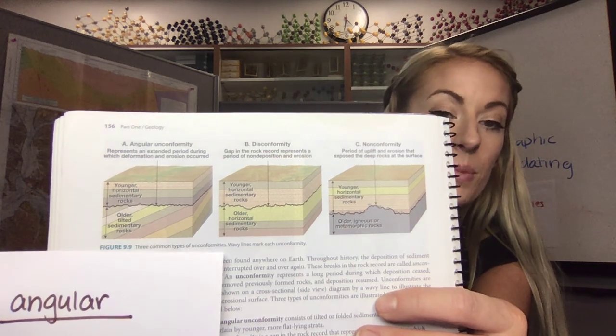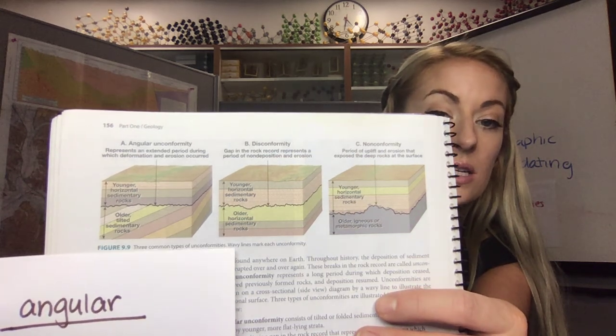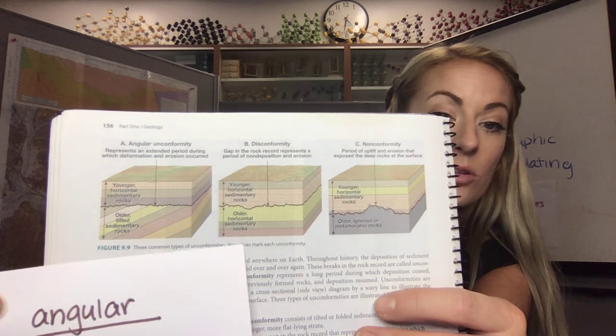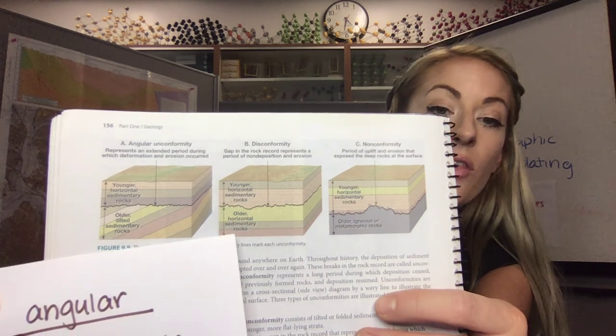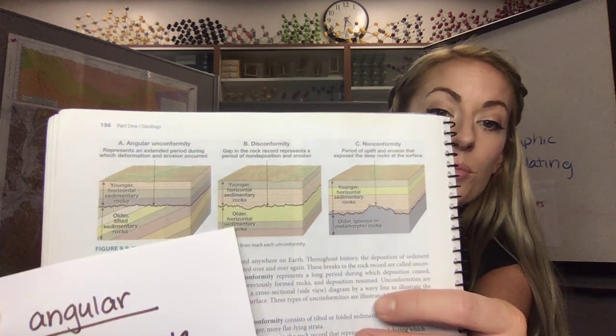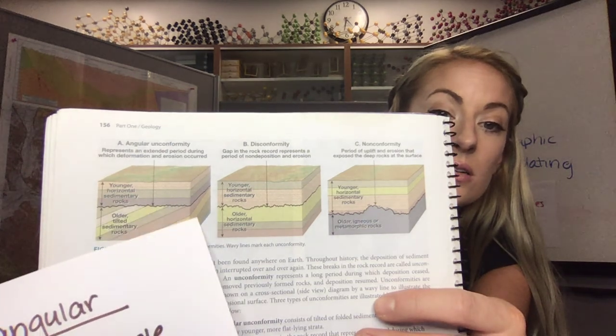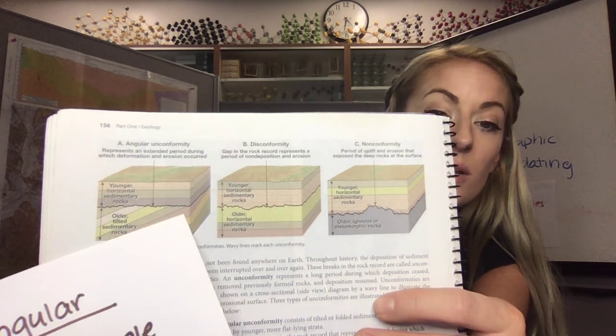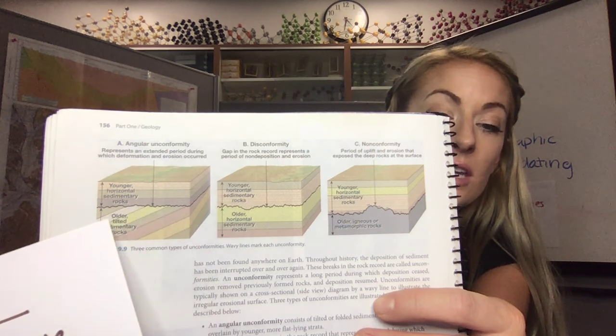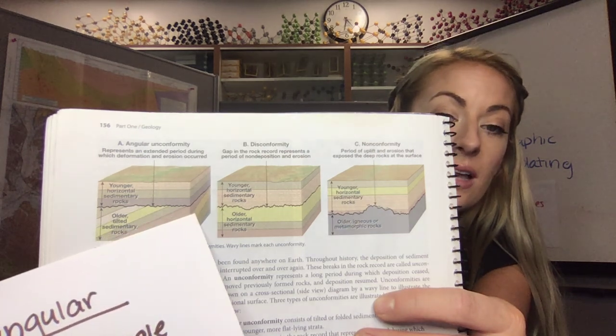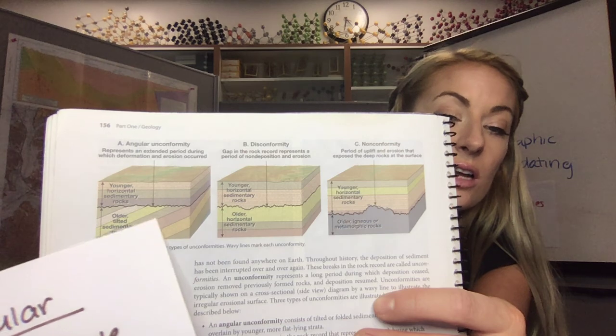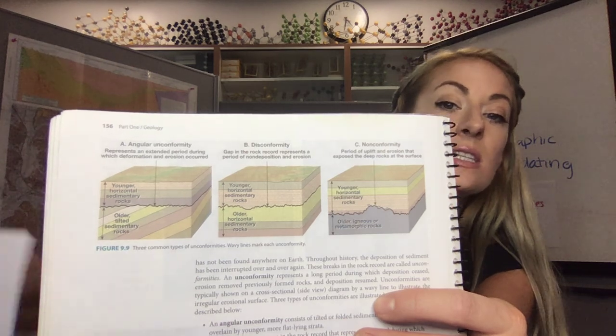What would have happened in this region is uplift causing tilting and subsequent erosion of the bottom-most layers, and then later you have deposition atop those. The boundary between the angled layers and the horizontal layers represents the unconformity itself. So this line you see here, the bolded squiggly line, is the angular unconformity. The boundary itself is the unconformity.